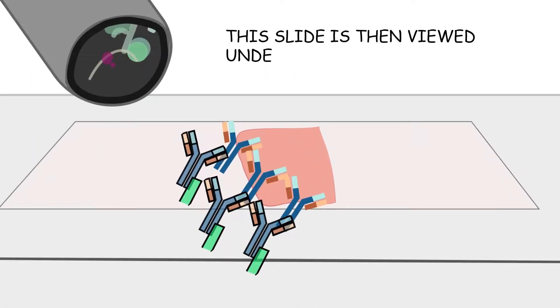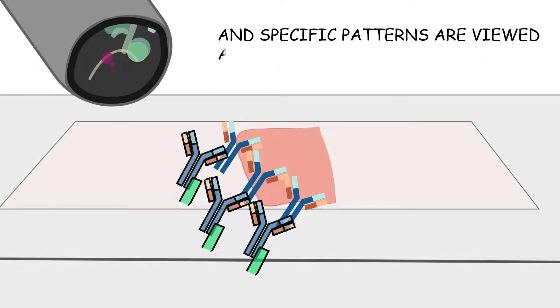This slide is then viewed under ultraviolet light in the microscope. And specific patterns are viewed according to the immunological disease being tested. As you see the anti-human immunoglobulins have arranged themselves according to the autoantibodies.